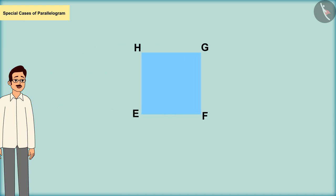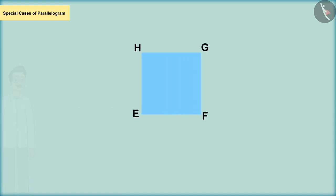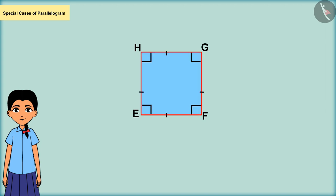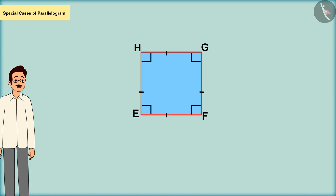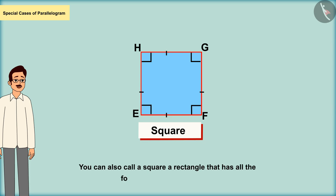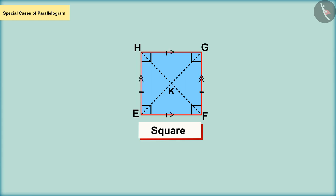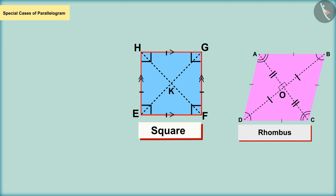Meena made a parallelogram whose four sides measure equal and all the angles are right angles. Yes, Meena, we call such a parallelogram a square. We can also call a square a rectangle that has the same measure of all arms. Since the opposite sides of the square are parallel, all the sides are of equal measure, and the opposite angles are of equal measure, these characteristics correspond to the characteristics of the rhombus.